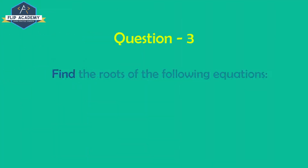Quadratic equation exercise 4.3, question number 3. The question is: find the roots of the following equation. First part: x minus 1 upon x equals 3, where x doesn't equal to 0.